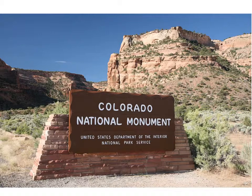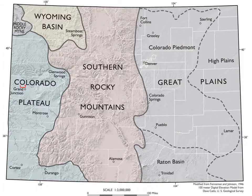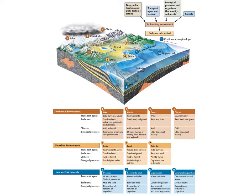Colorado National Monument, located just outside of Grand Junction on the Colorado Plateau, is a great place to see cool sedimentary rocks with different rock layers, cap rocks, and canyons. The cool thing about sedimentary rocks is they preserve evidence of the past — we call this depositional environments. Sediments deposited in continental environments like lakes, rivers, deserts, and glaciers differ from those at shoreline or marine environments. You can look at a sedimentary rock and determine whether the area was once an ocean, a lake, or a desert. Fossils preserved in these layers also tell us what organisms were living there.